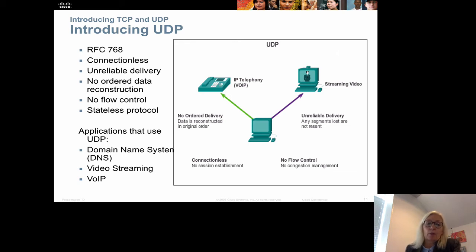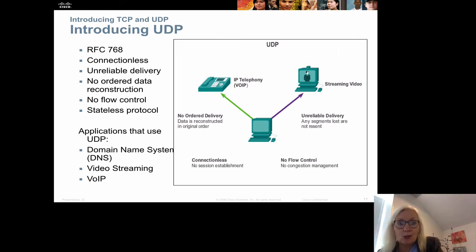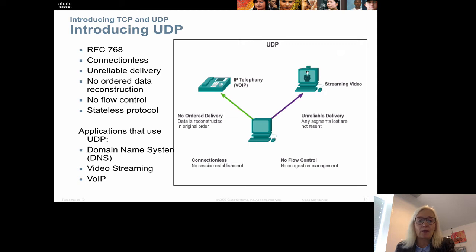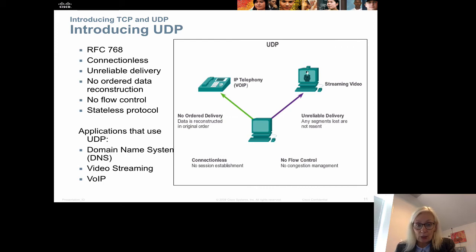UDP is a connectionless protocol — it does not check whether the destination is present on the network before sending. It's unreliable, doesn't check or resend anything, has no reassembly of data in the correct order, no flow control, and is a stateless protocol. Applications that use UDP include DNS, video streaming, and voice over IP.